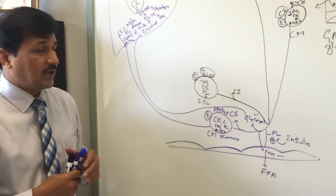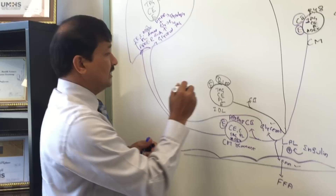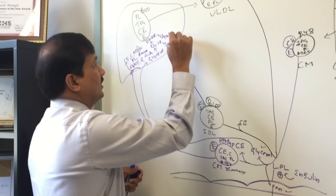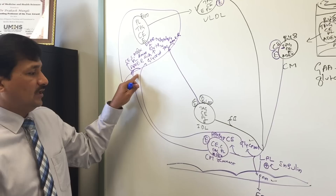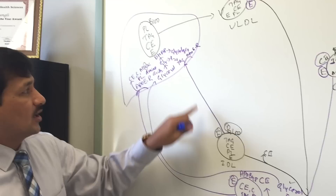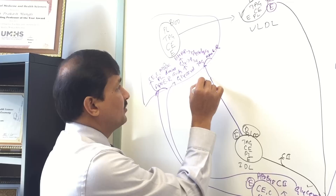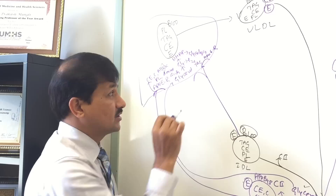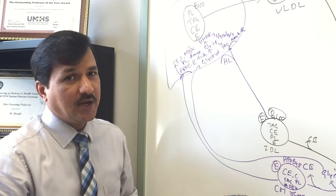Since IDL lacks ApoC2, it is no longer acted on by lipoprotein lipase. IDL has three possible fates. First, it can be taken up by the liver via ApoE receptors (remnant receptors), similar to chylomicron remnants, delivering all its contents to the liver. Second, it can pass through to the sinusoids of the hepatocyte, where hepatic lipase (HL) on the hepatocyte membrane degrades its triacylglycerol into free fatty acids and glycerol.